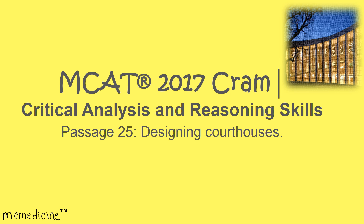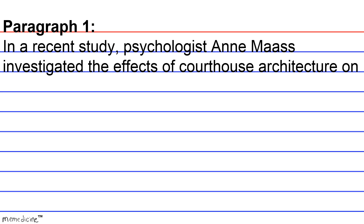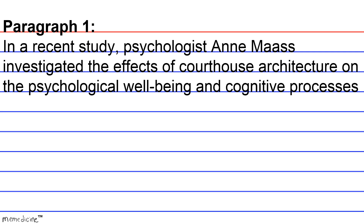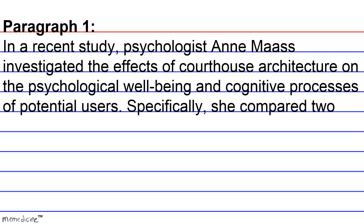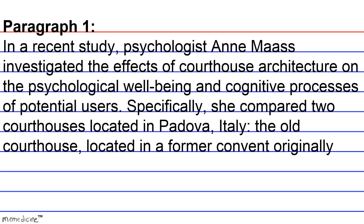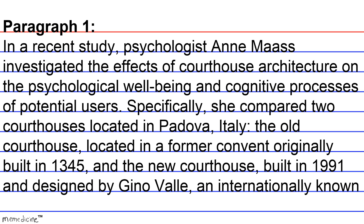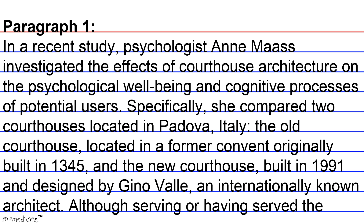Paragraph one: In a recent study, psychologist Mass investigated the effects of courthouse architecture on the psychological well-being and cognitive processes of potential users. Specifically, she compared two courthouses located in Padova, Italy — the old courthouse located in a former convent originally built in 1345, and a new courthouse built in 1991 and designed by Gino Valley, an internationally known architect.